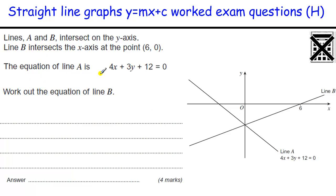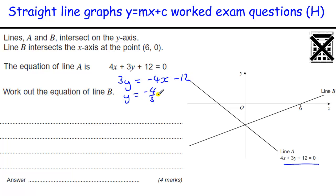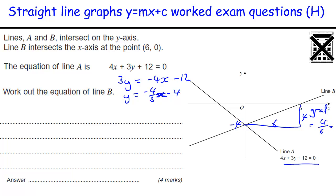We've got intersecting lines. The equation of line A is given — it's written in a nasty form, so if we rearrange it, taking everything to the other side, we get minus 4x minus 12. So y equals minus 4 over 3 x. Dividing by 3 gives minus 4. So this passes through minus 4. We know it's going across 6 and up 4, so the gradient is y divided by x, which is 2 thirds. The equation of the line is y equals 2 thirds x minus 4.